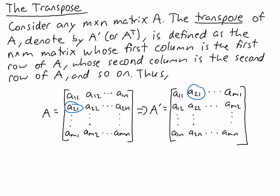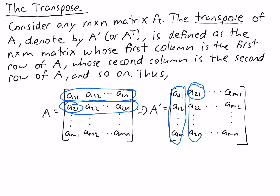So what we did in taking the transpose is we took the entire first row and made that the first column of the transpose. We took the entire second row and made that the second column of the transpose, and so on. The last row of A is the last column of the transpose.